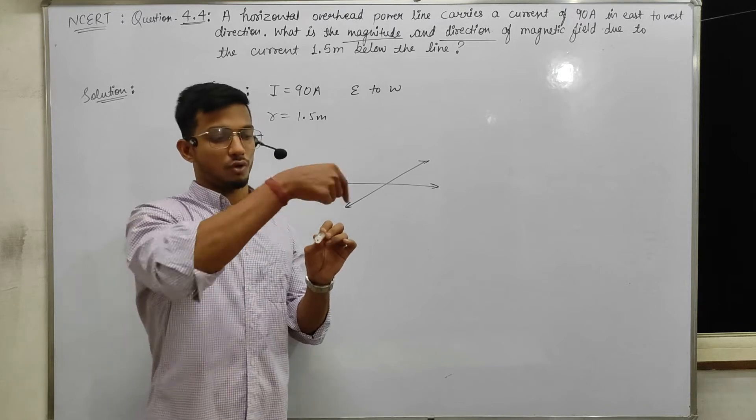Let's start. B is equal to, first of all the formula: μ₀/4π × I/r × sin 90. Sin 90 will be 2 for infinite wire. Now we will put it directly, don't cut it yet, we will solve it later.